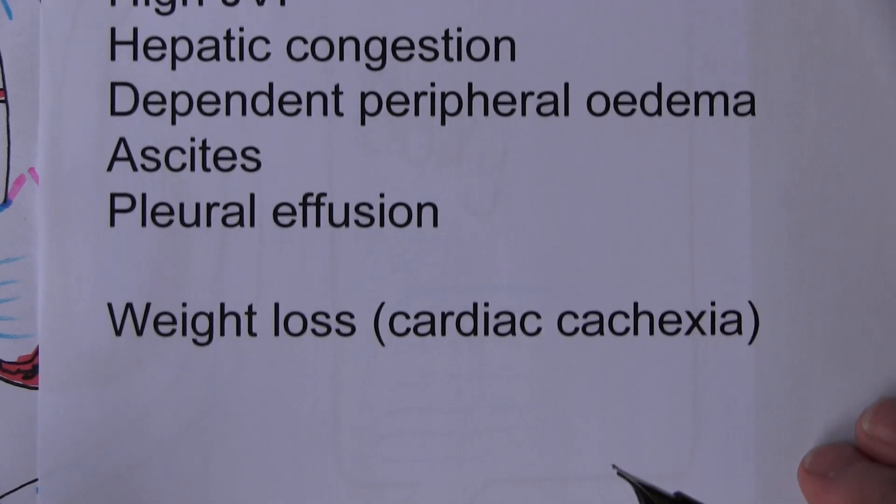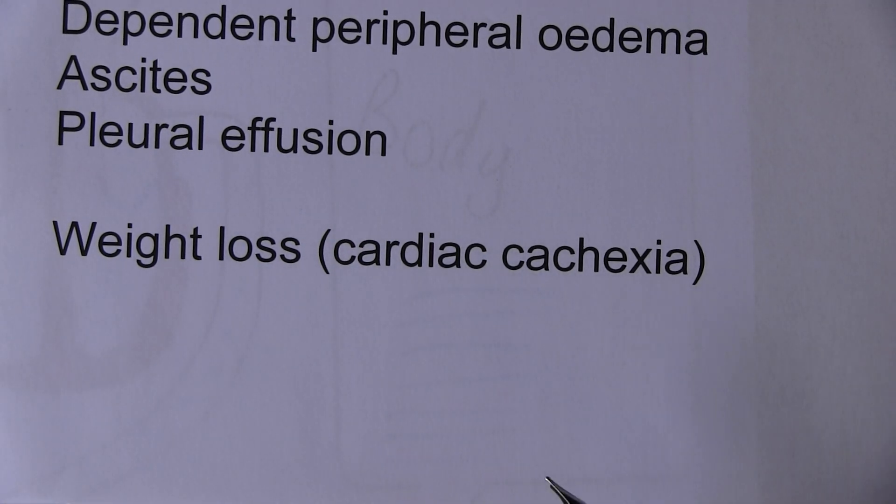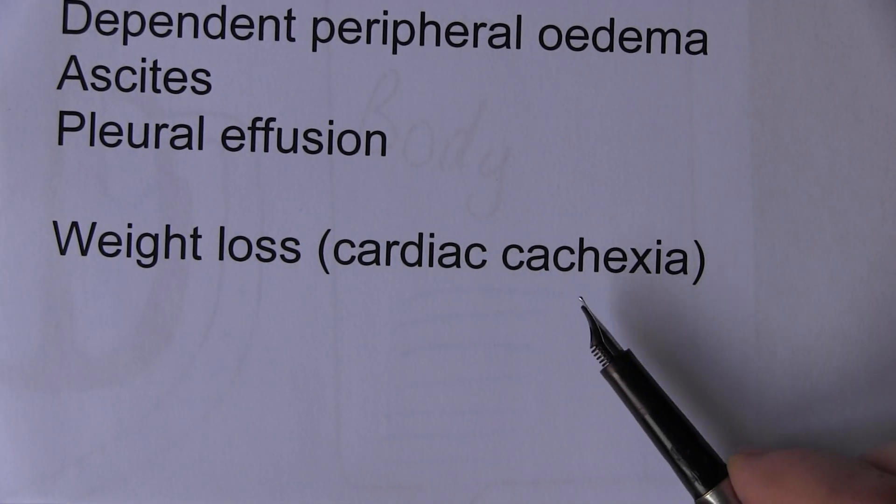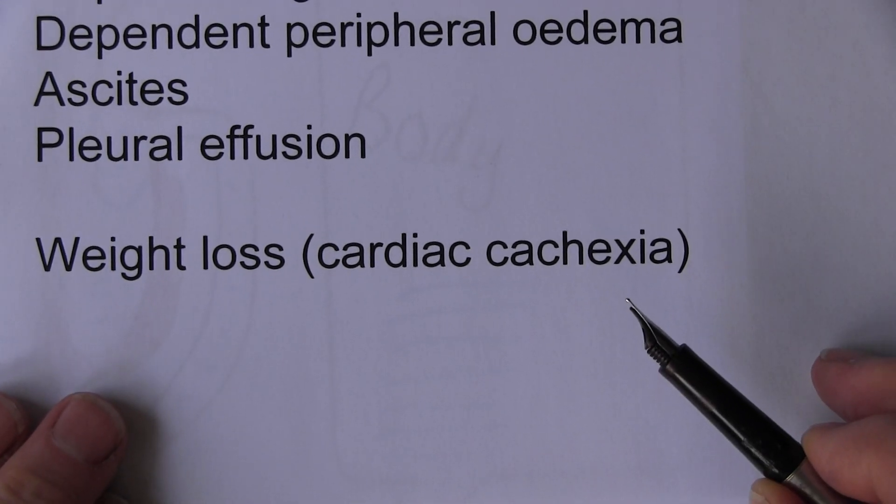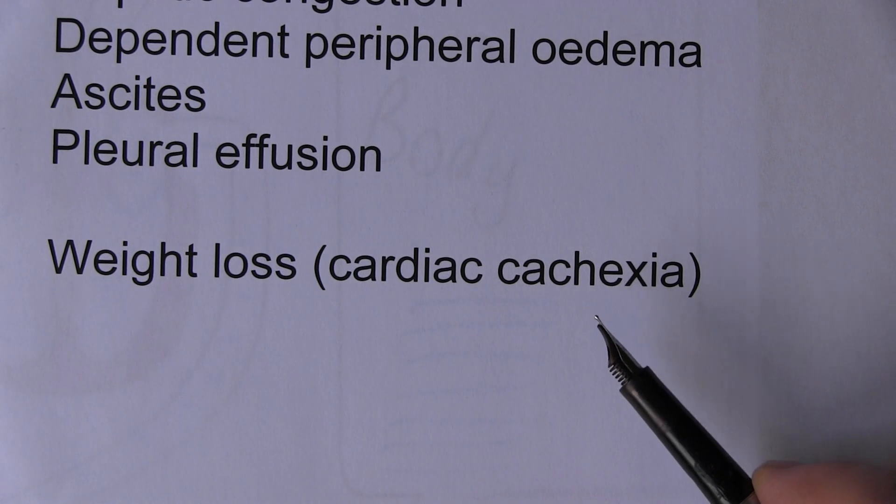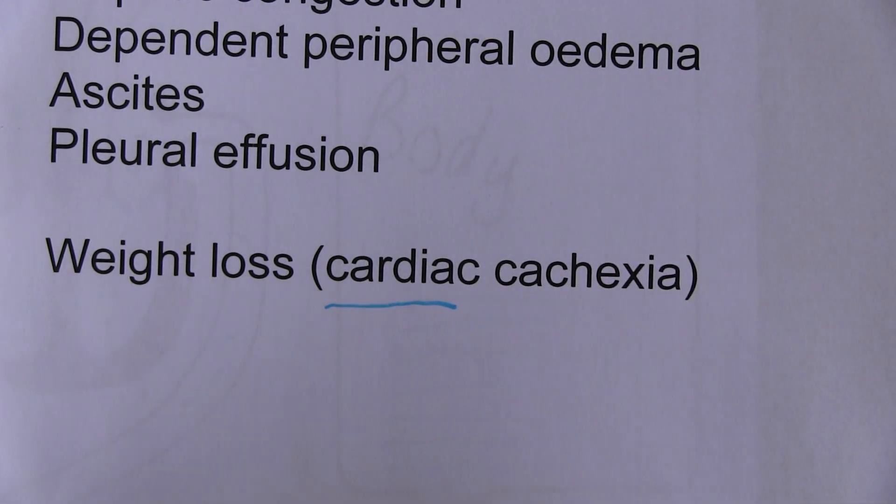The other thing these patients sometimes get is weight loss, sometimes called cardiac cachexia. Cachexia is a term we usually use in association with cancer. Patients become cachexic when they have appalling weight loss due to release of inflammatory cytokines in cancer. But we can also get cardiac cachexia. These patients can become emaciated and wasted.